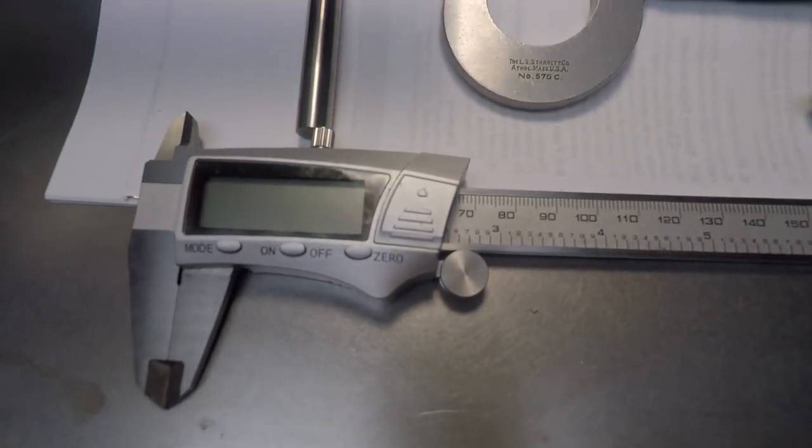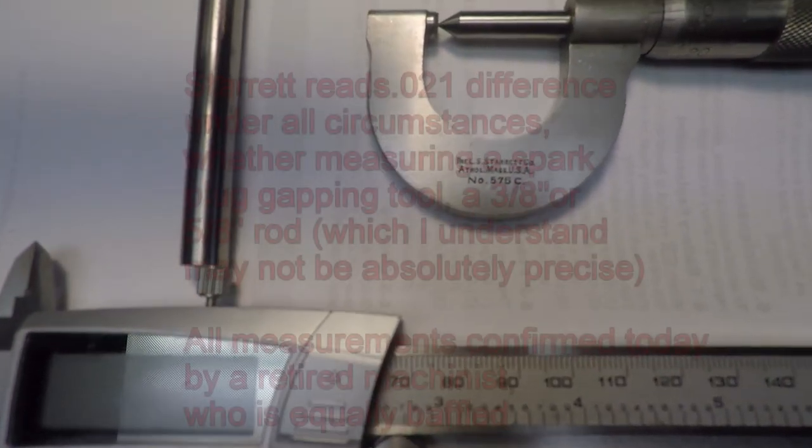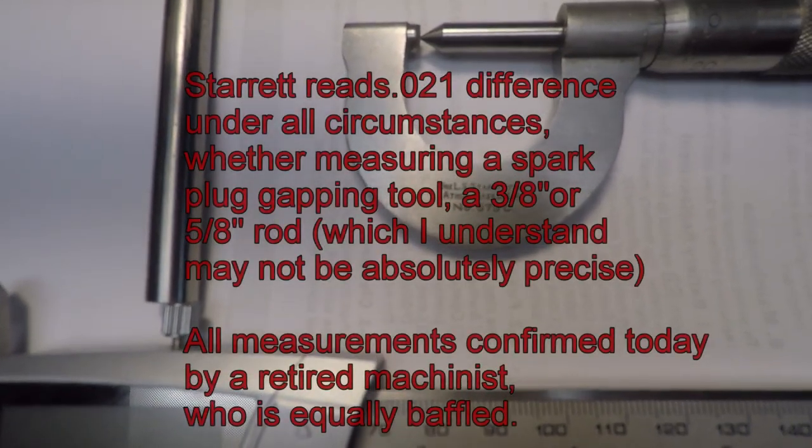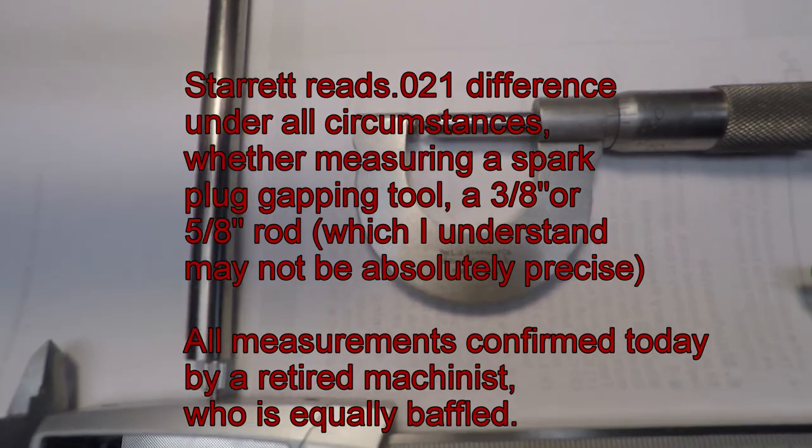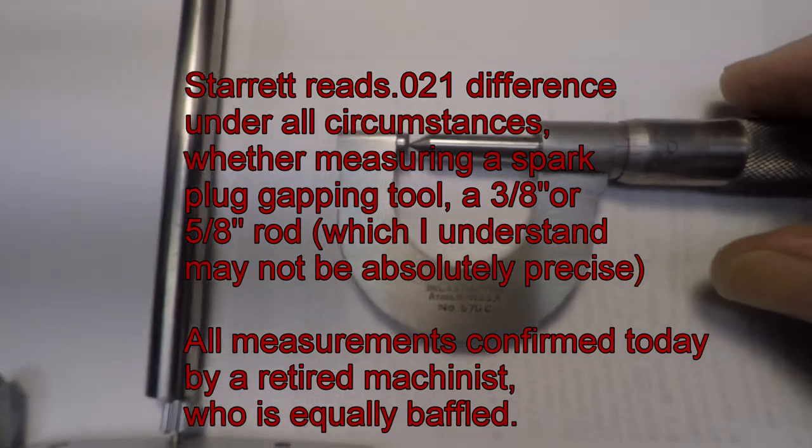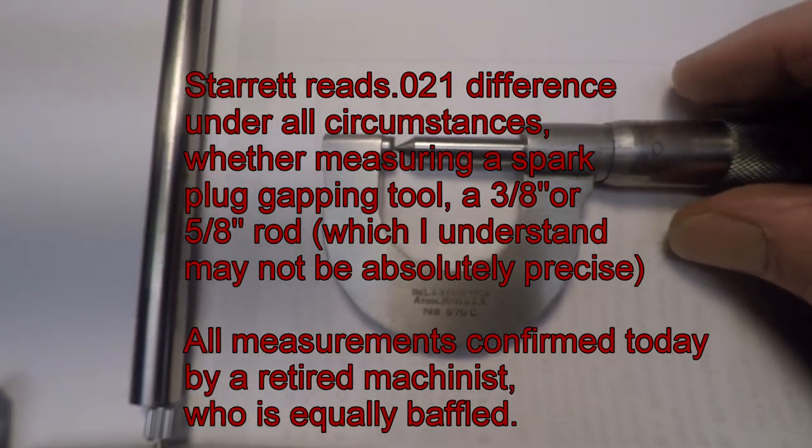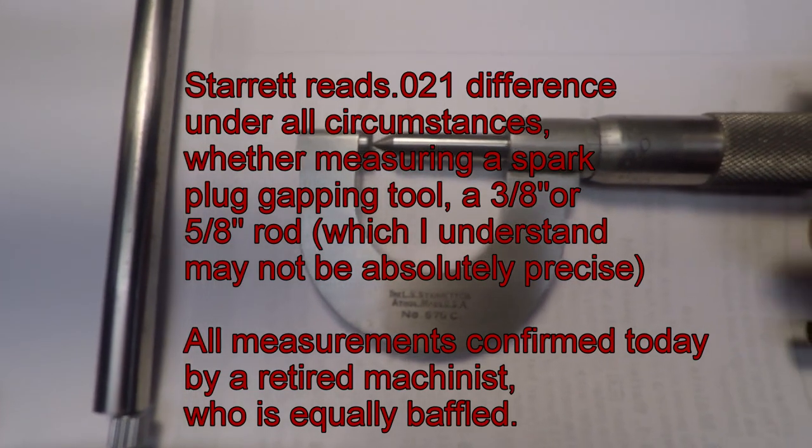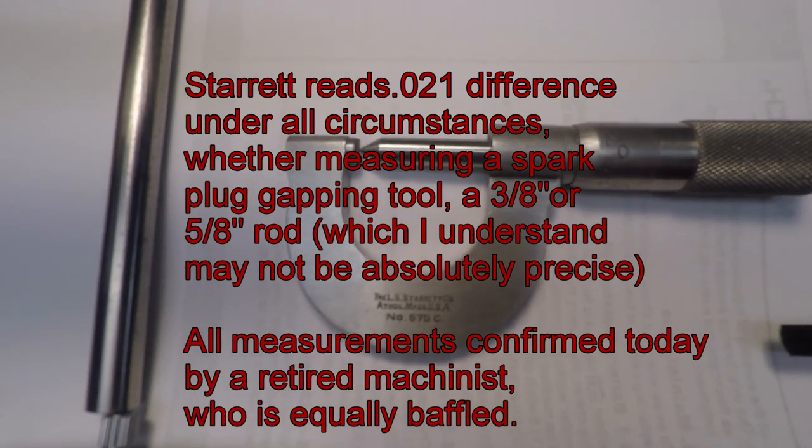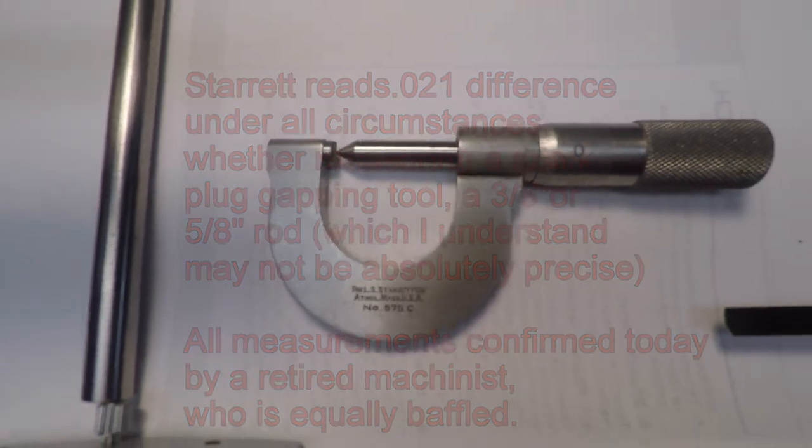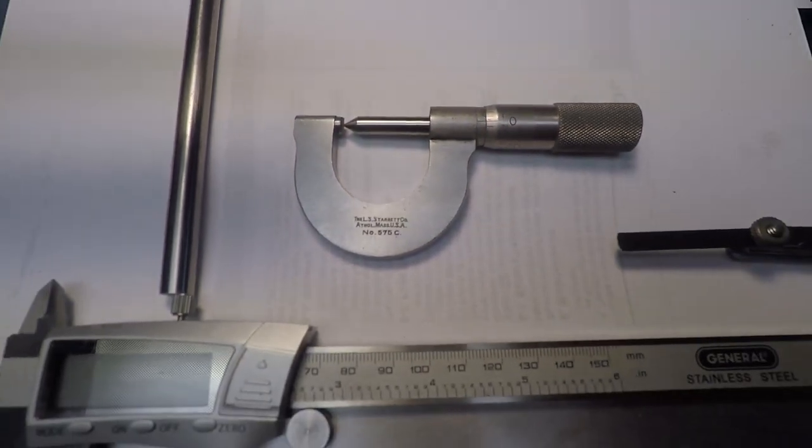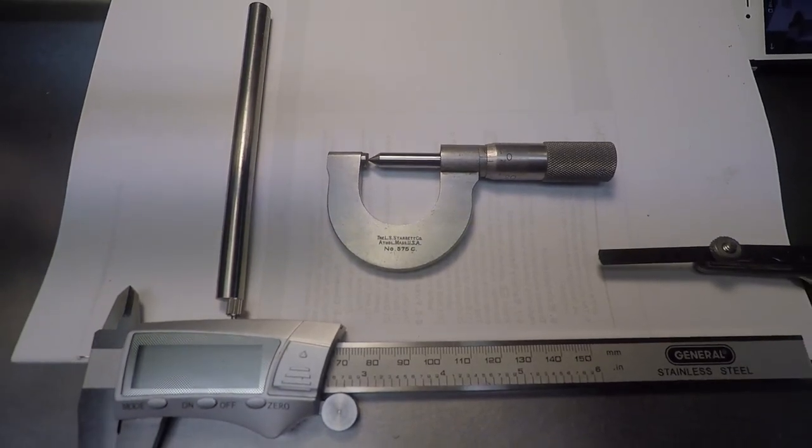But I get erroneous readings 20, 30, one thousandths out, yet this reads to zero. So how is it that this Starrett micrometer can all of a sudden be twenty-one thousandths out? It's just a complete mystery to me. I have no idea if any of you have any solutions to this.